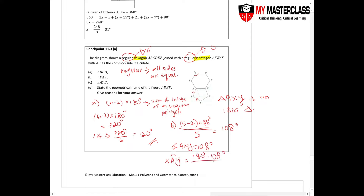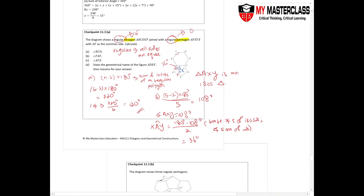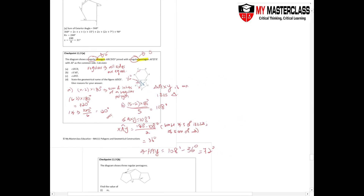Using the base angles of an isosceles triangle and the angle sum of a triangle: angle XAY = (180° − 108°) ÷ 2 = 36°. Since each interior angle of the pentagon is 108°, angle FAY = 108° − 36° = 72°.